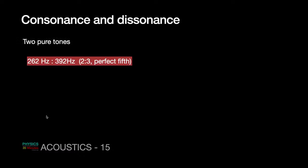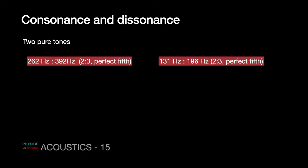For example: suppose I have two pure tones, one at 262 Hz and one at 392 Hz. The ratio is 2:3, which falls in the category of perfect fifth. Let me take another pair: 131 Hz and 196 Hz. Again, the ratio is approximately 2:3 — also perfect fifth.